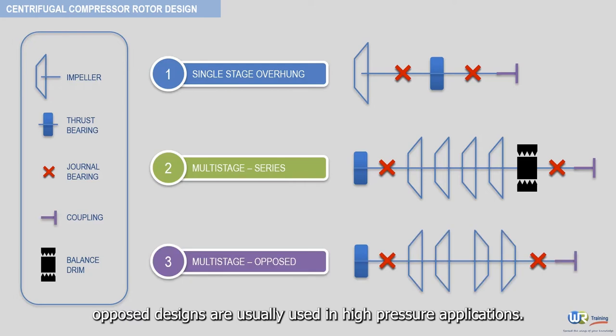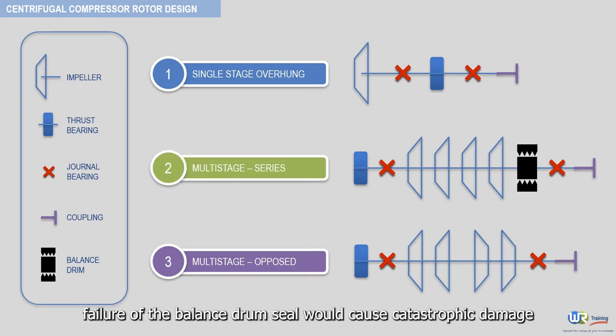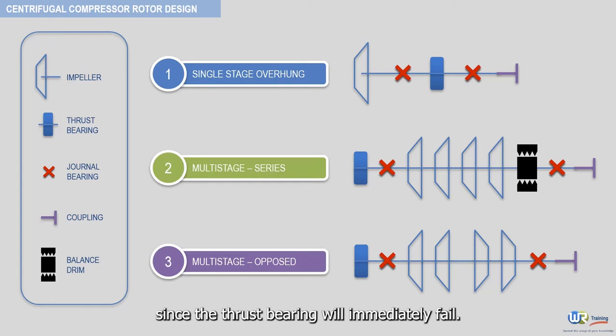However, if the rotor were a series configuration as seen here, failure of the balance drum seal would cause catastrophic damage since the thrust bearing will immediately fail.